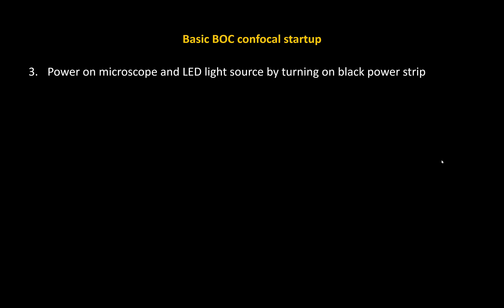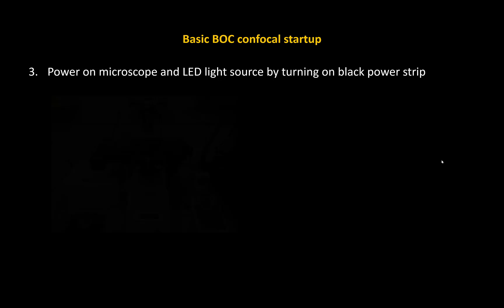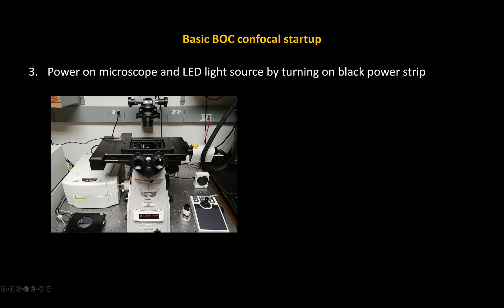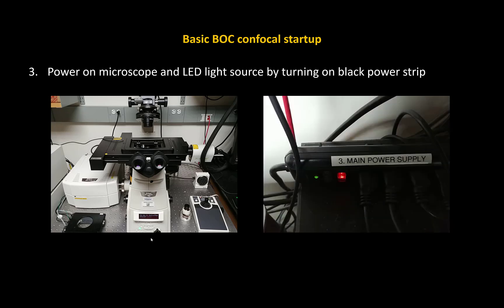The next step is to power on the microscope and the LED light source by turning on the black power strip. For our confocal setup, we can also use an LED light source for basic fluorescence viewing — you don't have to use the detectors and lasers just to look at your sample. The LED light source can be used with the oculars to view your sample on the stage without going to the computer. It's useful for quickly checking whether your fluorophore is active. Turn on the power strip — it's labeled and located behind everything — and it will power the microscope and LED light source.